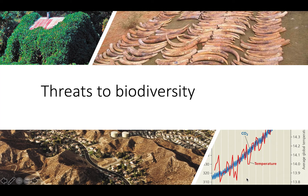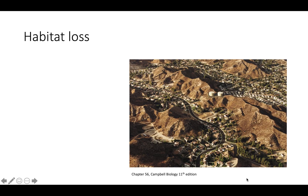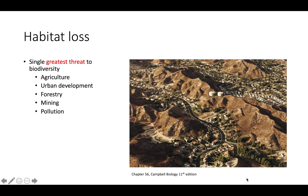This video is about the threats to biodiversity. One threat is habitat loss, which is actually the greatest threat to biodiversity. It can happen through a variety of ways, including agriculture, urban development, forestry, mining, and pollution. In this picture on the right-hand side, we can see a residential development and how it has really impacted the surrounding environment, making habitat previously available to species either entirely unavailable or greatly reduced in size.